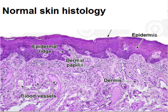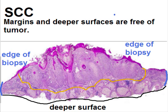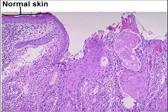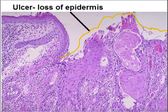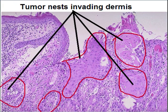The dermis contains blood vessels and connective tissue. Now in squamous cell carcinoma, you can appreciate a skin section with tumour nodules. The deeper surface is also free of tumour, and the edges of the biopsy are also free of tumour. There is an ulcer — normal skin on the left side — and here is the ulcer with loss of epidermis, and the ulcer bed shows tumourousness.